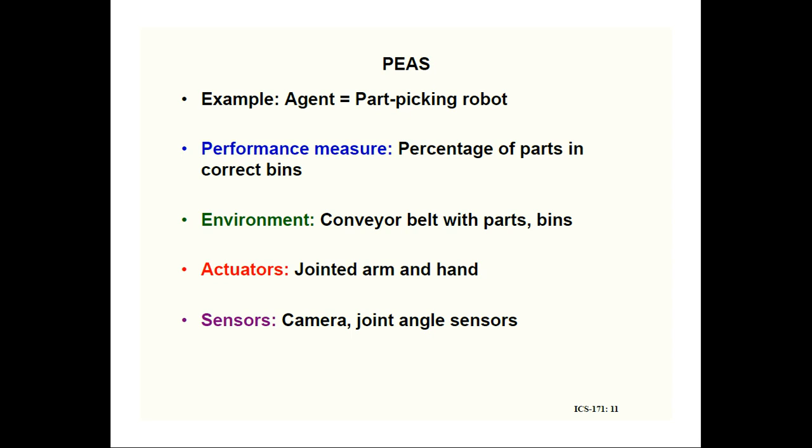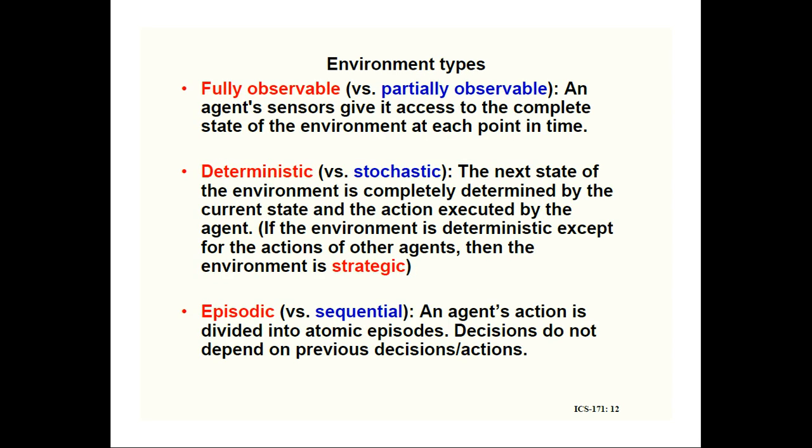The performance measure of the part-picking robot is the percentage of parts placed in the correct bins — how many parts are in the correct bins, and the performance is measured based on that percentage. The actuators for this robot are a jointed arm and hand. The sensors can be a camera and a joint angle sensor. This completes the PEAS for the part-picking robot.